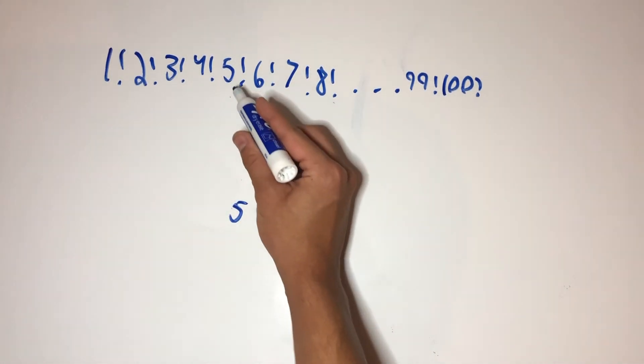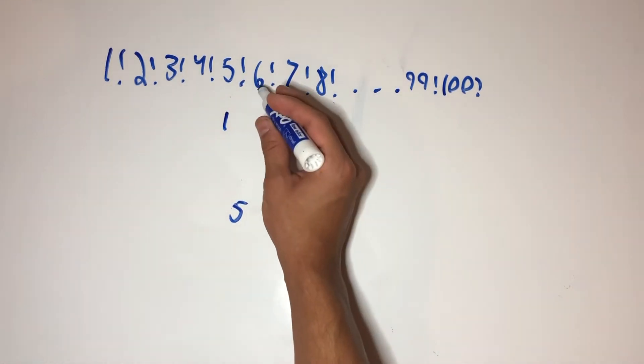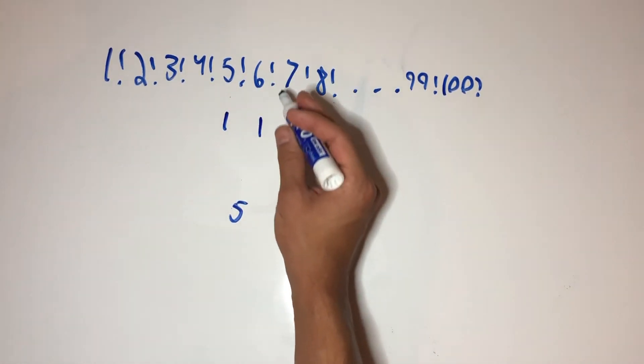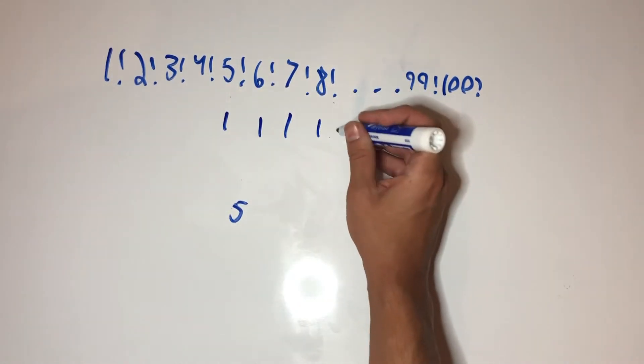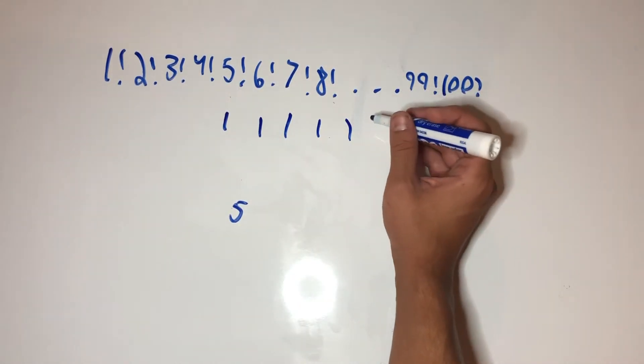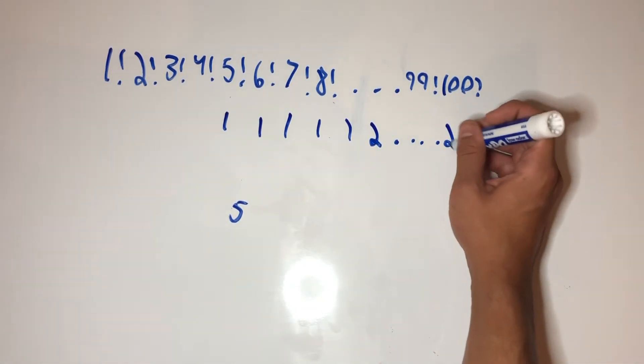Now, starting with this 5, in 5 factorial there's going to be one factor of 5. This next factorial will also have one factor of 5, and then 7 factorial will, and 8 factorial will, up until you get to 10. 9 will have 1, and 10 will have 2 factors of 5 for the 10 and 5. Now this will go up to 15, and then so on.